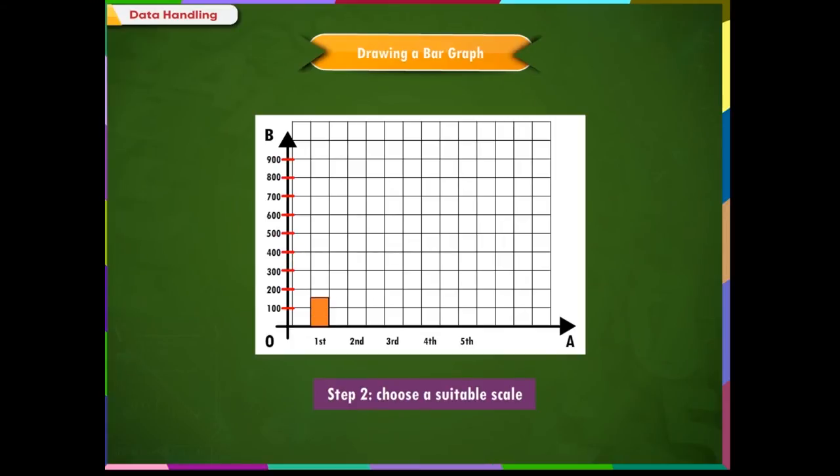In the first week, number of mattresses manufactured are 650. So, draw a vertical bar at the point representing first week on the horizontal axis. The height of the bar will be 650 on the vertical axis.